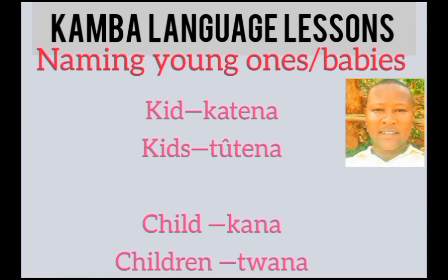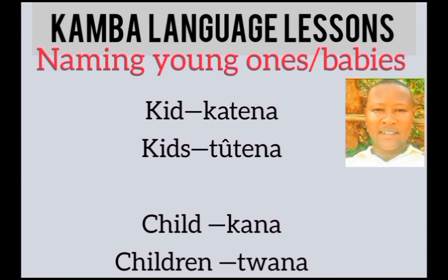Child is kana, children is tuana. Kid is katena, kids is to tena. Child is kana, children is tuana.